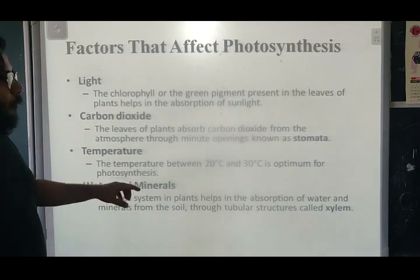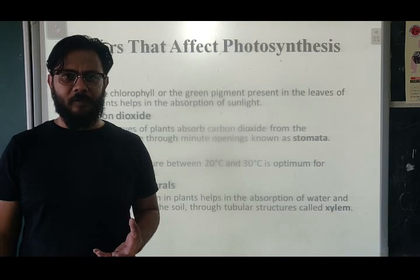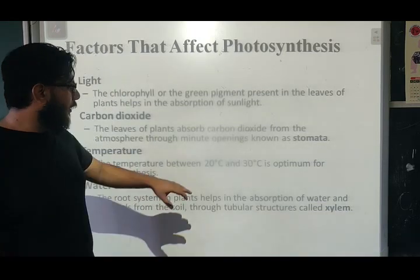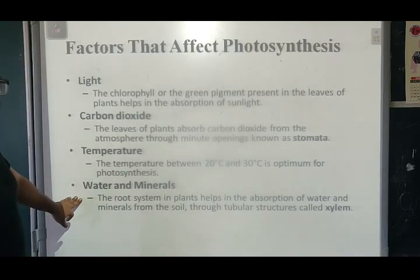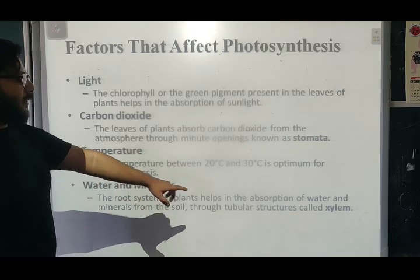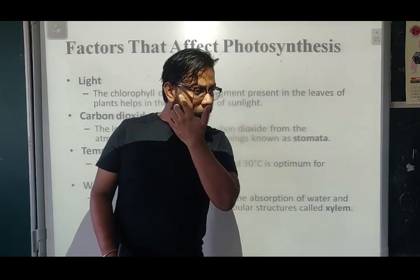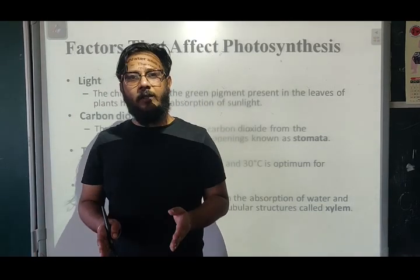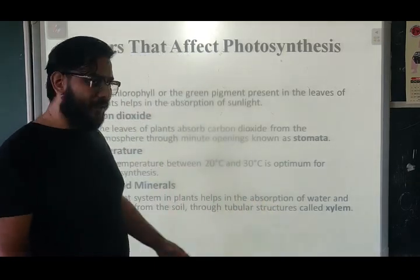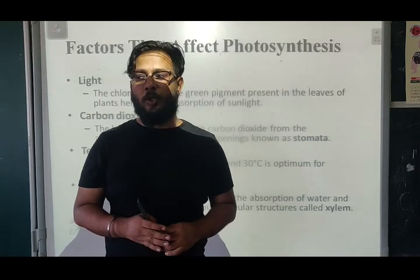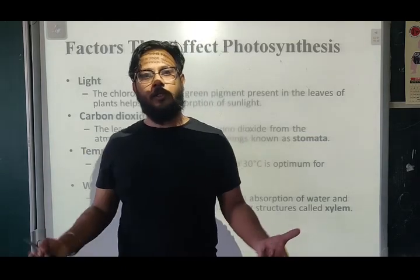Temperature is also a factor — it needs to be around 20 to 30 degrees Celsius for optimal photosynthesis. Water and minerals are absorbed by the root system through tubular structures called xylem, which we have studied in the chapter on tissues. Xylem transports water and minerals from the soil to various parts of the plant body.